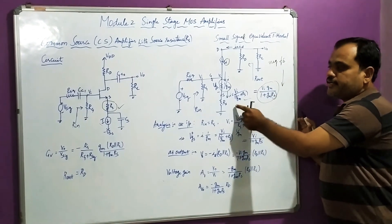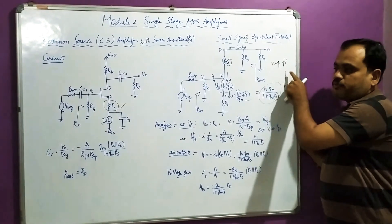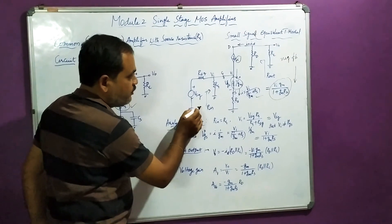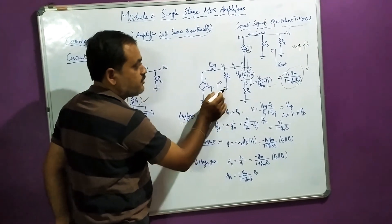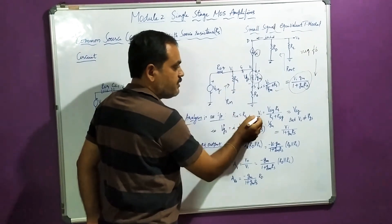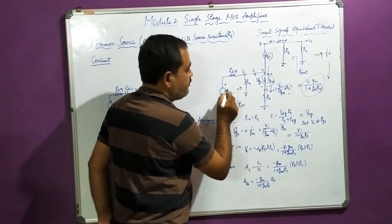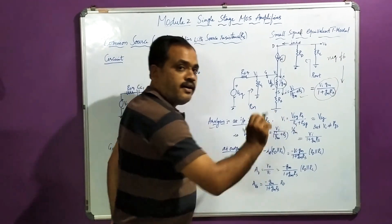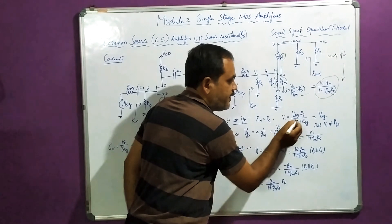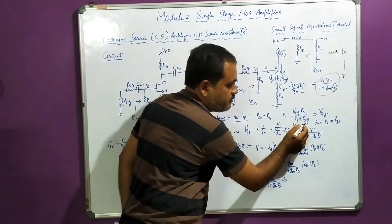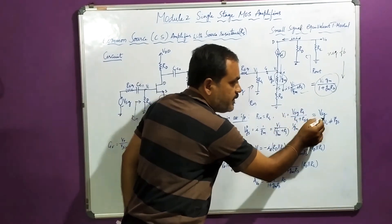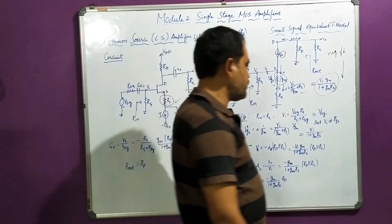RS gives degeneration resistance and acts as a negative feedback path. Moving on to the analysis: at the input side, looking from the input side, the input resistance is Rg. Applying the voltage divider, it is V_signal times Rg divided by (Rg + R_signal). Now if Rg is very very high, Rg will cancel with R_signal and Vi is approximately equal to V_signal — same as in the common source amplifier.